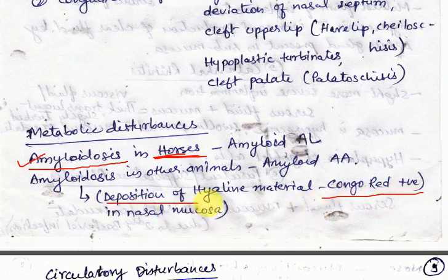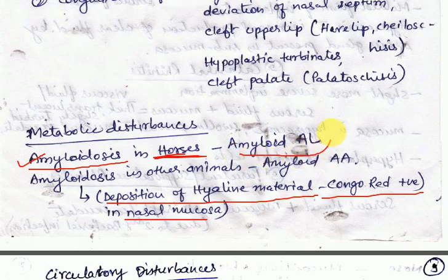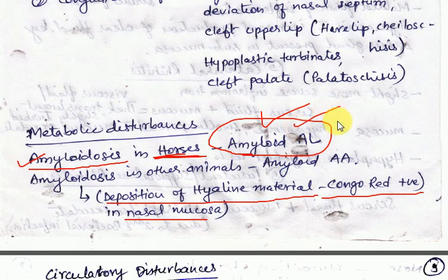Unlike amyloidosis in other organs of domestic animals, where amyloid is of the reactive type (i.e., amyloid AA), in equine nasal amyloidosis it is of the immunocytic type, i.e., amyloid AL.